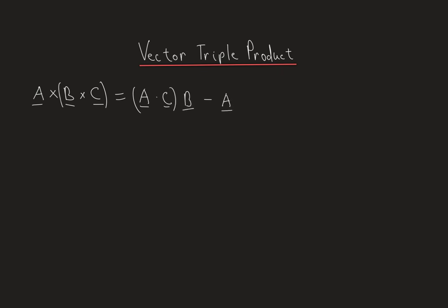The dot product always gives us a scalar — that's why we also call it the scalar product. So (a dot c) gives us a scalar, let's call it lambda 1, and (a dot b) gives us another scalar, which we call lambda 2.